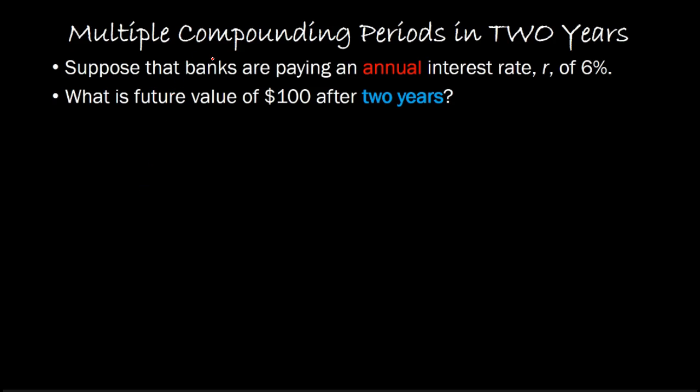So far we've talked about how multiple compounding periods have an impact on our future value calculation when we are only going out one year into the future. What if we are going out two years, three years, five, ten years into the future? What is the general formula for future value calculation when interest is being compounded more than once?